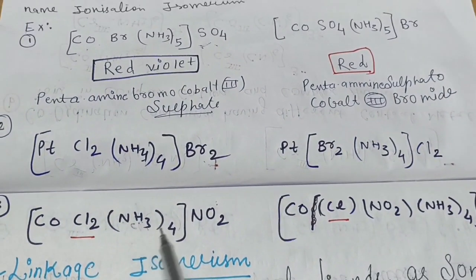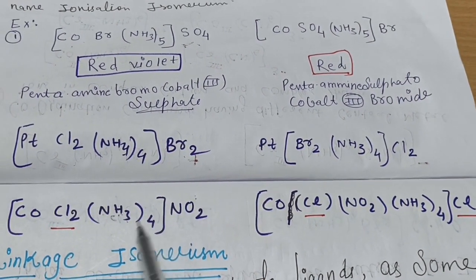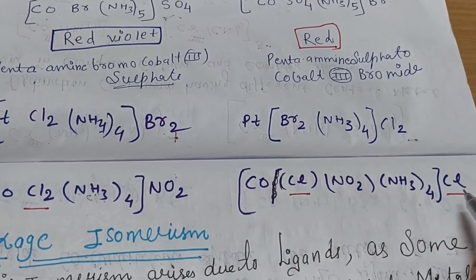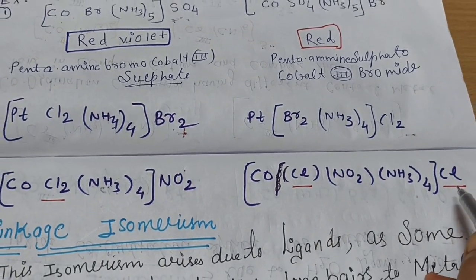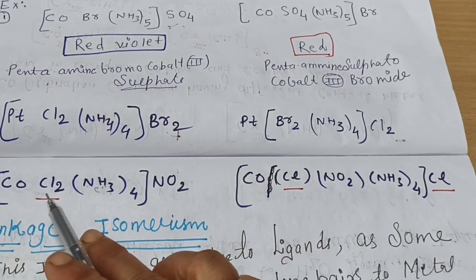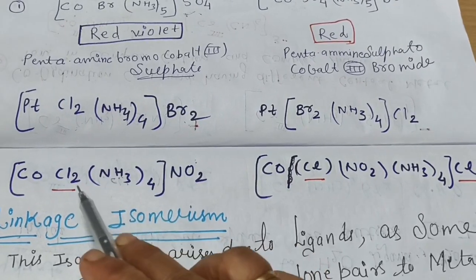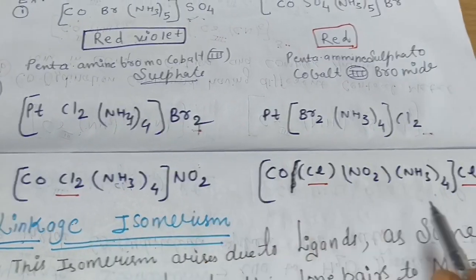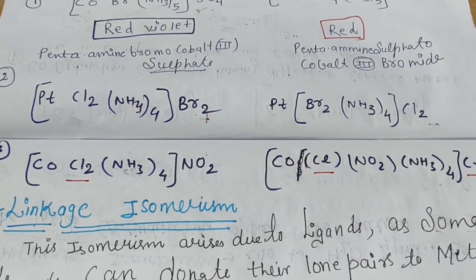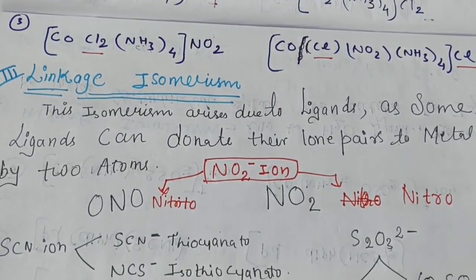Another example of ionization isomerism: [Co(NH₃)₄Cl(NO₂)] — one Cl remains in the coordination sphere, while the other Cl goes outside and NO₂ comes inside the coordination sphere. The ions are exchanging positions — this is ionization isomerism.